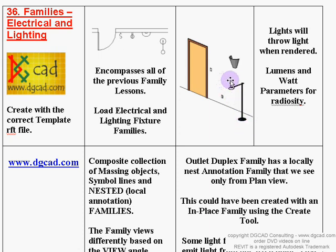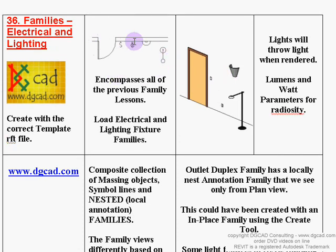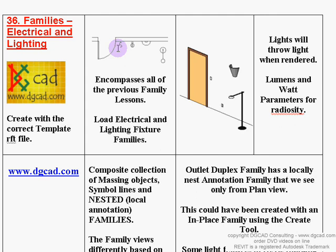Electrical families combine all the previous lessons — whether wall-hosted or floor-hosted — using extrudes, revolutions, sweeps, and so on. They take full advantage of all family aspects because depending on which view you're in, a different display is shown. In plan view, the mass element is set not to display; instead, it shows a nested annotation — in this case, an 'S' with a little stem — which is locally saved within the family file as a nested annotation family.